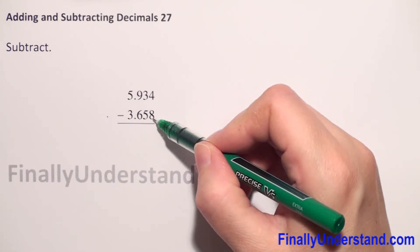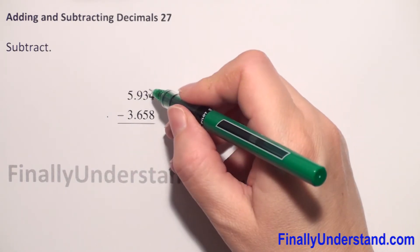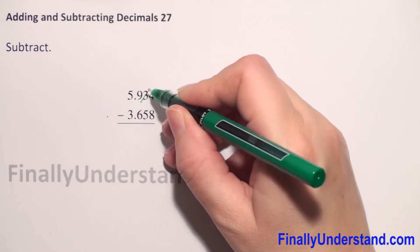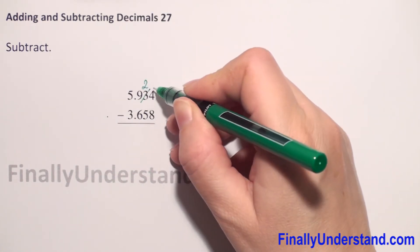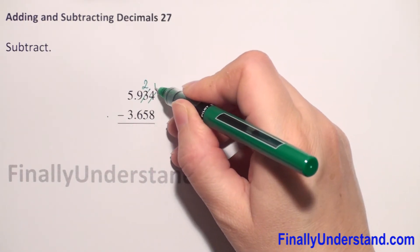4 is less than 8 so we have to do borrowing. From 3 we borrow 1, so it will be 2, and now we have here 14.